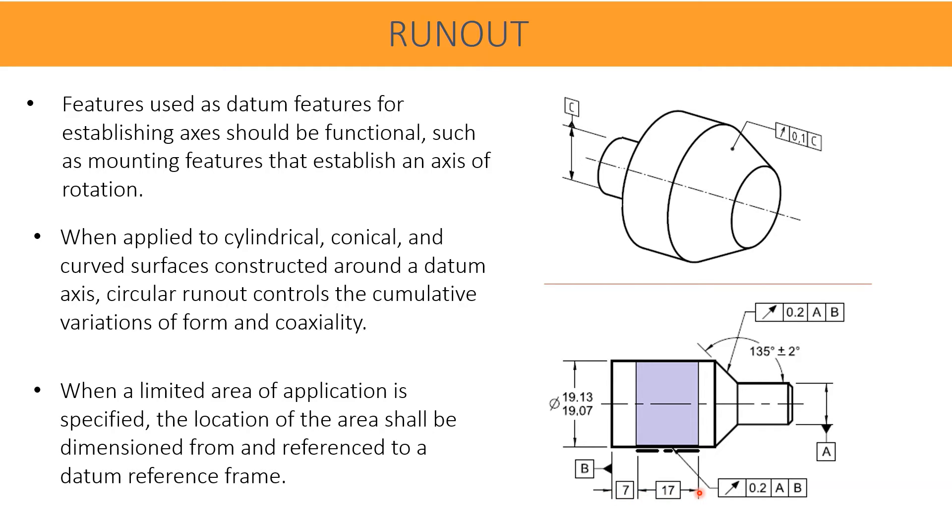The runout is controlled in 0.2 with respect to datum A and datum B. In this case, there is no limit for the length of the control of the runout. So anywhere, any cross-sections, we can check it.